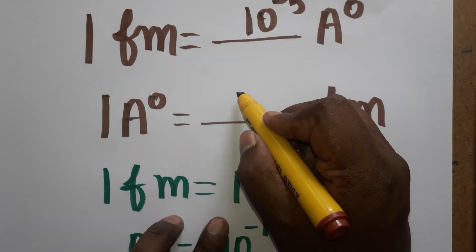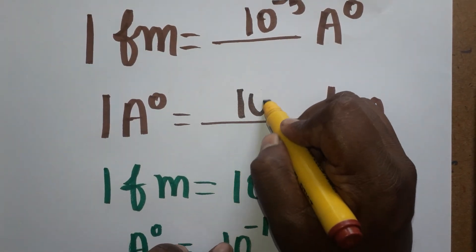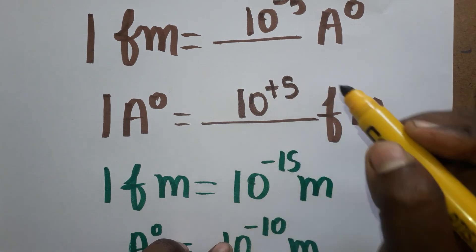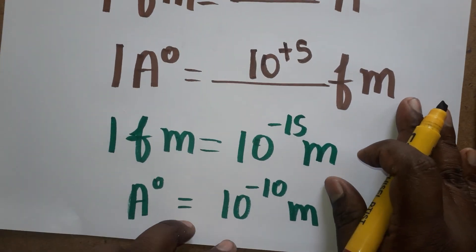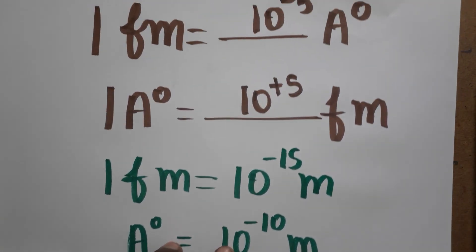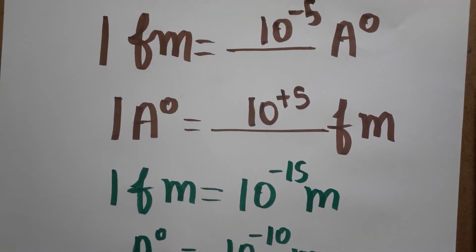So one angstrom unit is equal to 10 power plus 5 femtometer. Thank you for watching my channel; please subscribe.